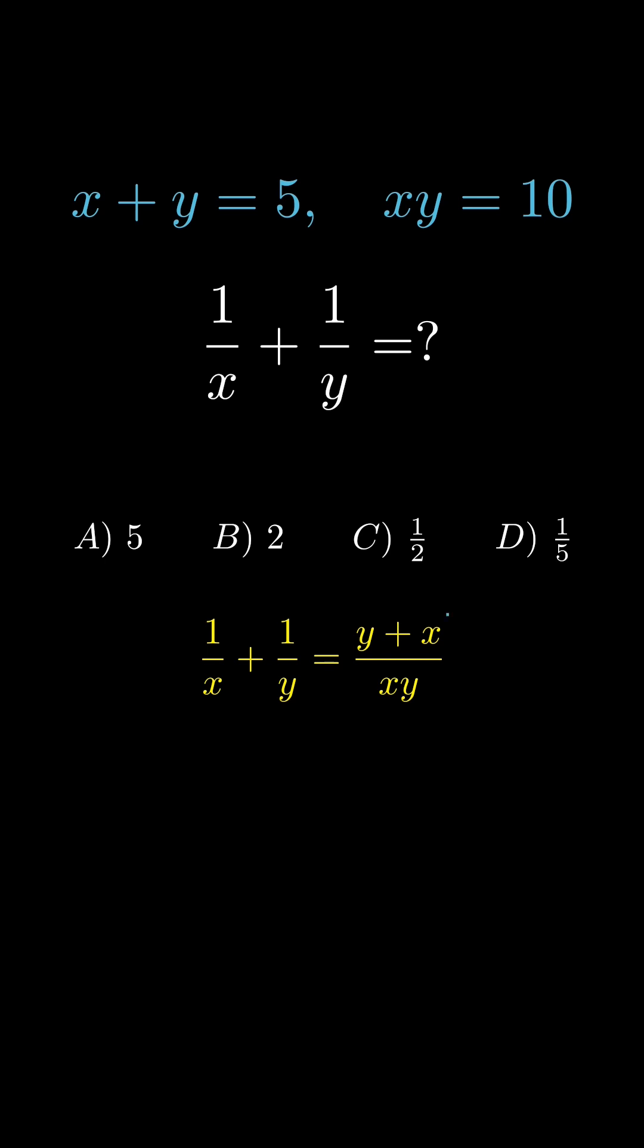Wait a sec, those pieces look familiar, right? From the given equation, x plus y is 5 and x times y equals 10. So plug them in. That is 5 over 10, which simplifies to 1 half.